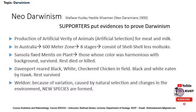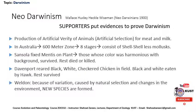There were some scientists — Wallis, Huxley, Haeckel, and Weisman — who called themselves neo-Darwinians in the 1900s. They were strong supporters of Darwinism because they had strong evidence to prove it. They proved the production of artificial varieties of animals for meat and milk, which is called artificial selection. If artificial selection is being operated on a very small scale, how is it possible that natural selection is not working?